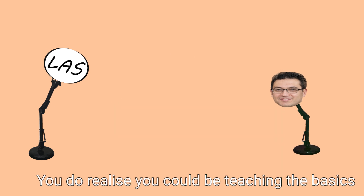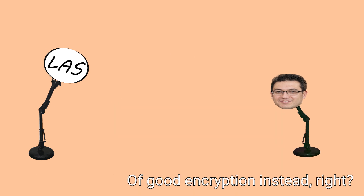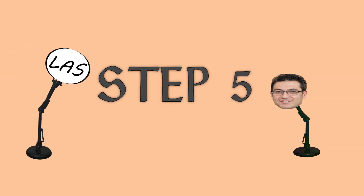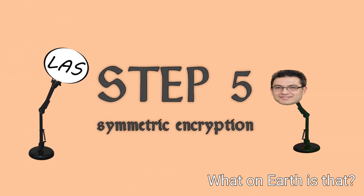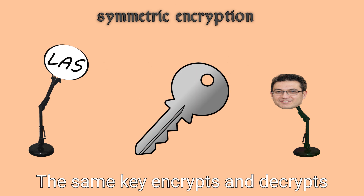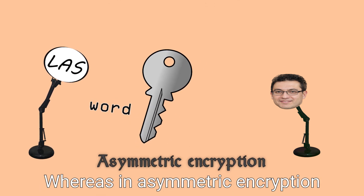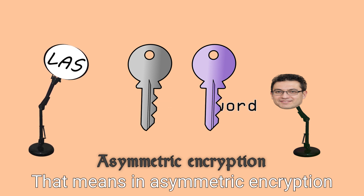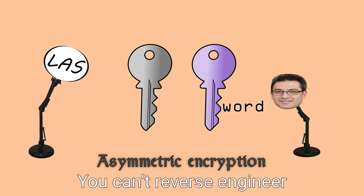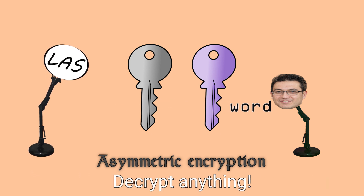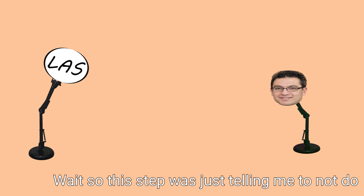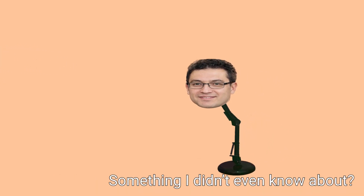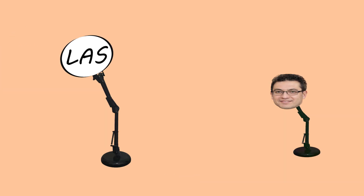You do realise you could be teaching the basics of good encryption instead, right? Step five: keep using symmetric encryption. In symmetric encryption, the same key encrypts and decrypts, whereas in asymmetric encryption, two different keys are at play. That means in asymmetric encryption, you can't reverse engineer the encryption method to decrypt anything. So this step was just telling me to not do something I didn't even know about? Yes. Got a problem?